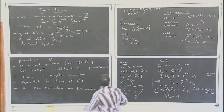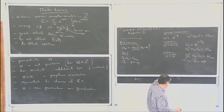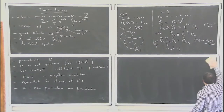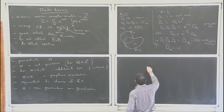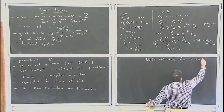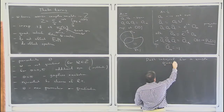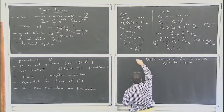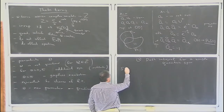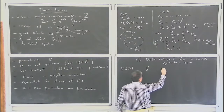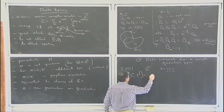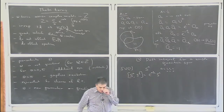Now we change gears and go to a very different example. Before that, we discuss one single quantum spin. The topic will be the path integral for a single quantum spin. Let's start with the SU(2) algebra with generators S_A, where A equals x, y, z. The commutation relations are the standard spin commutators. This is a general SU(2) algebra.